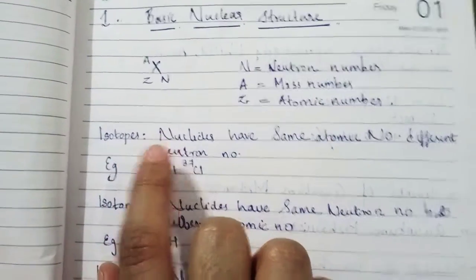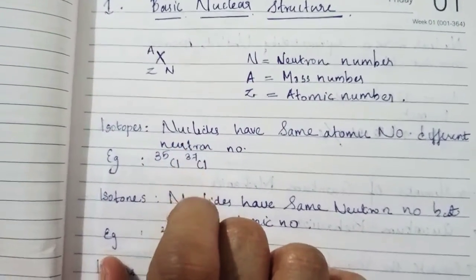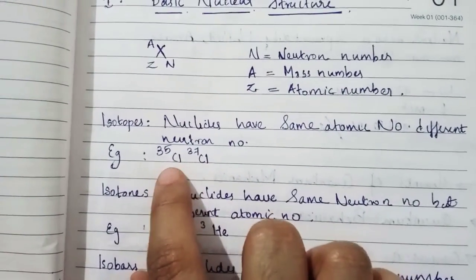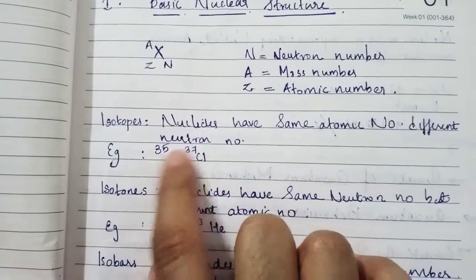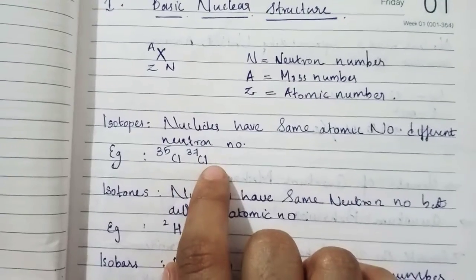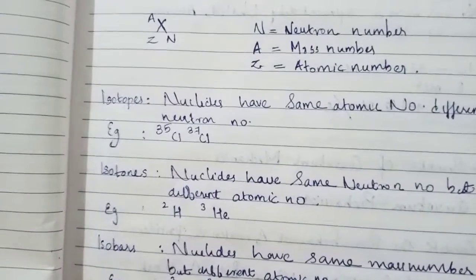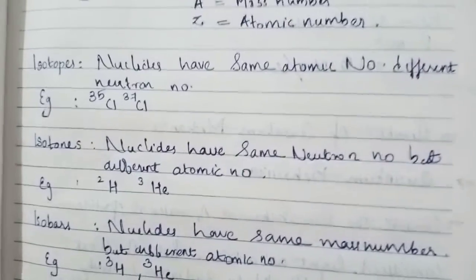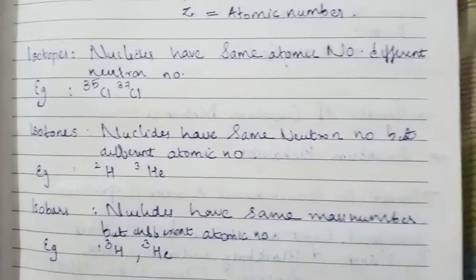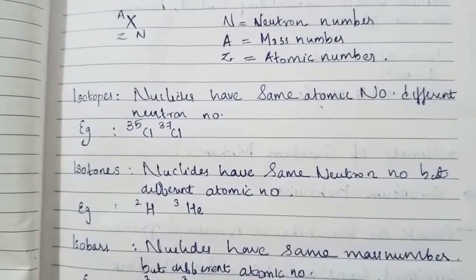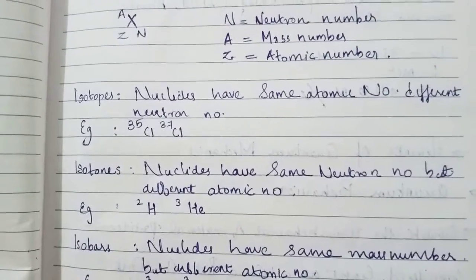What do you mean by isotopes? Isotopes are nuclides that have the same atomic number but different neutron number. The example is chlorine-35 and chlorine-37. Here the atomic number is the same and the neutron number is different. And isotones are nuclides that have the same neutron number but different atomic number, such as H-2 and He-3. Here the atomic number is different but the neutron number is the same.